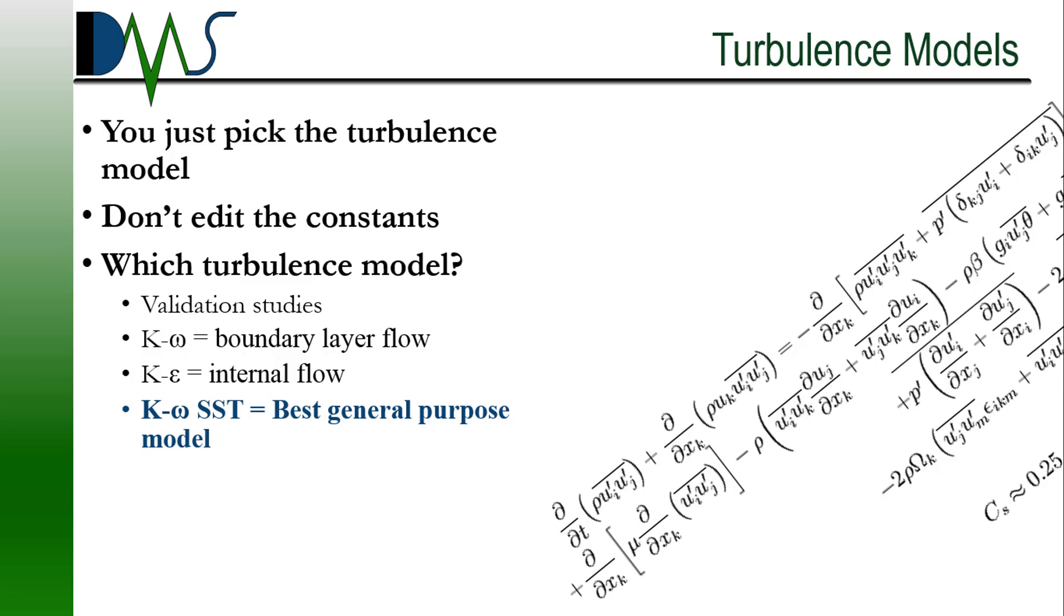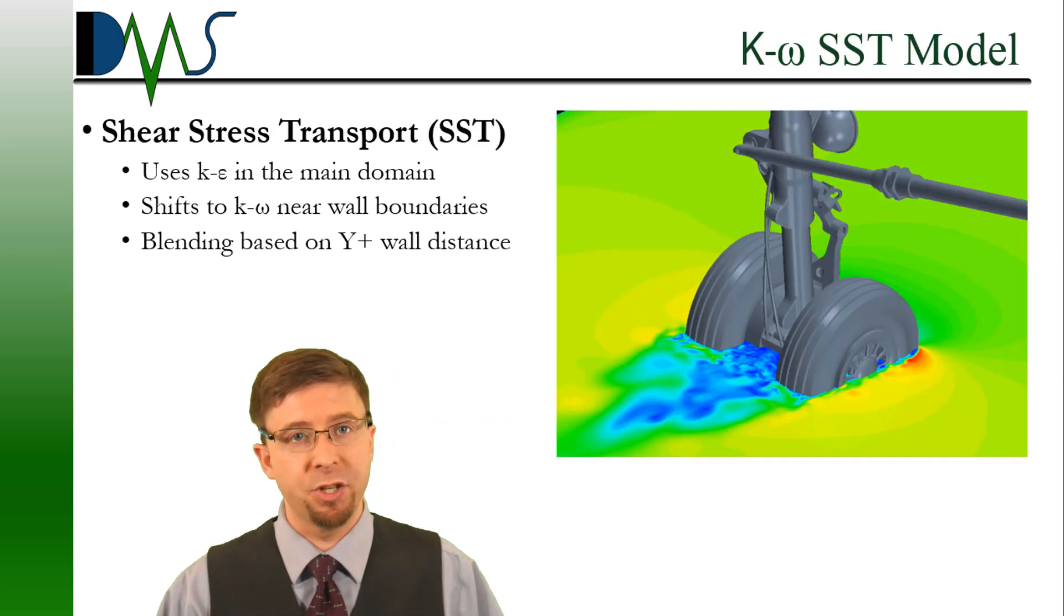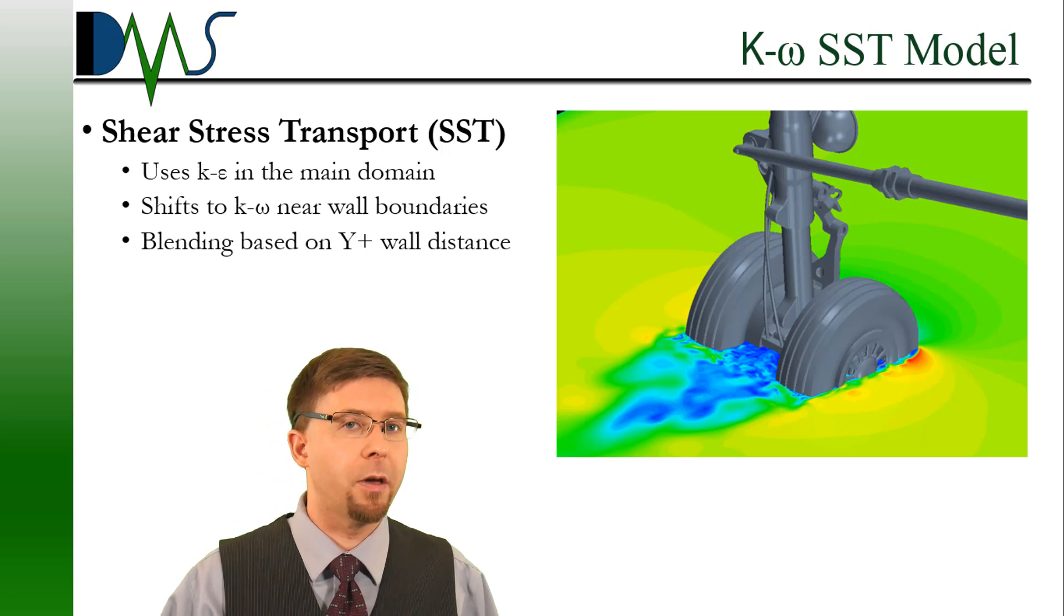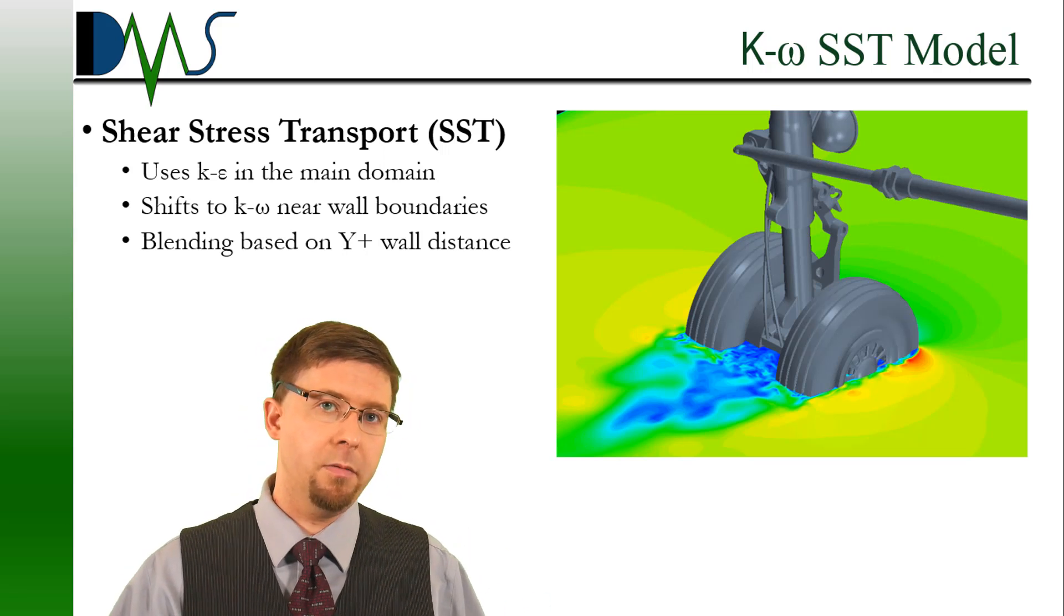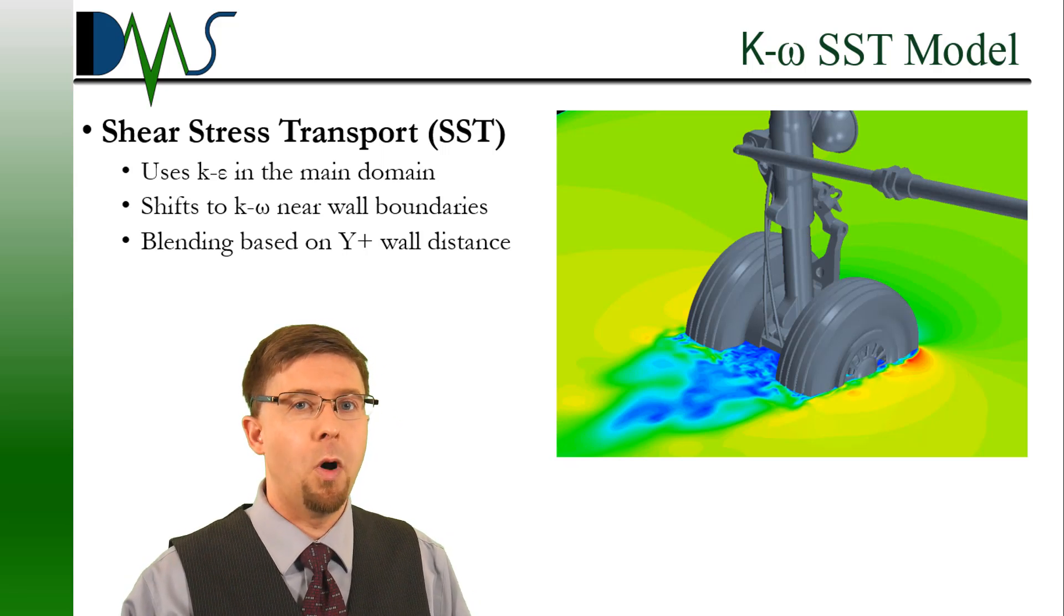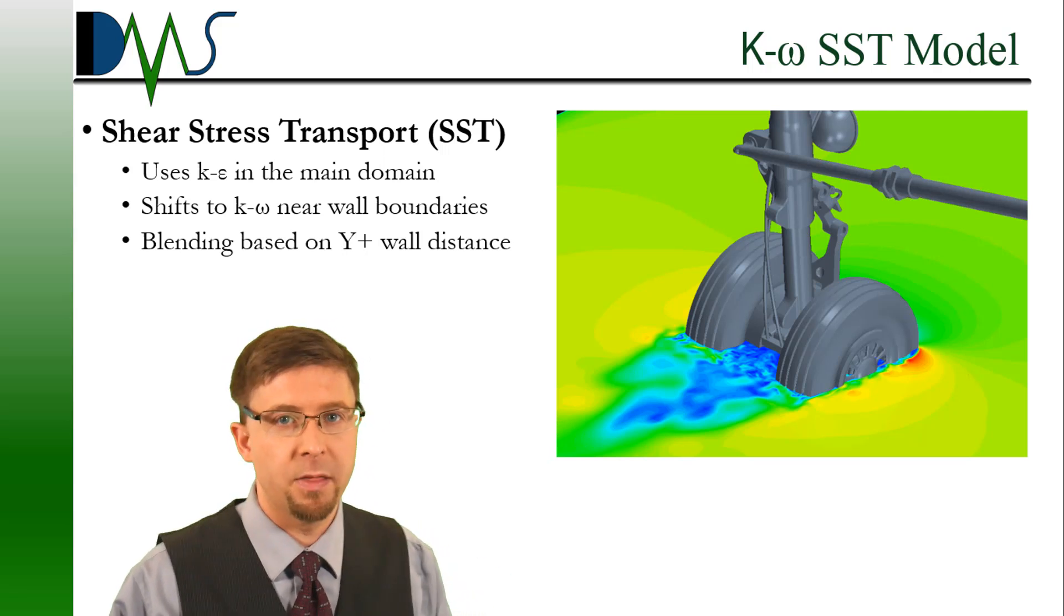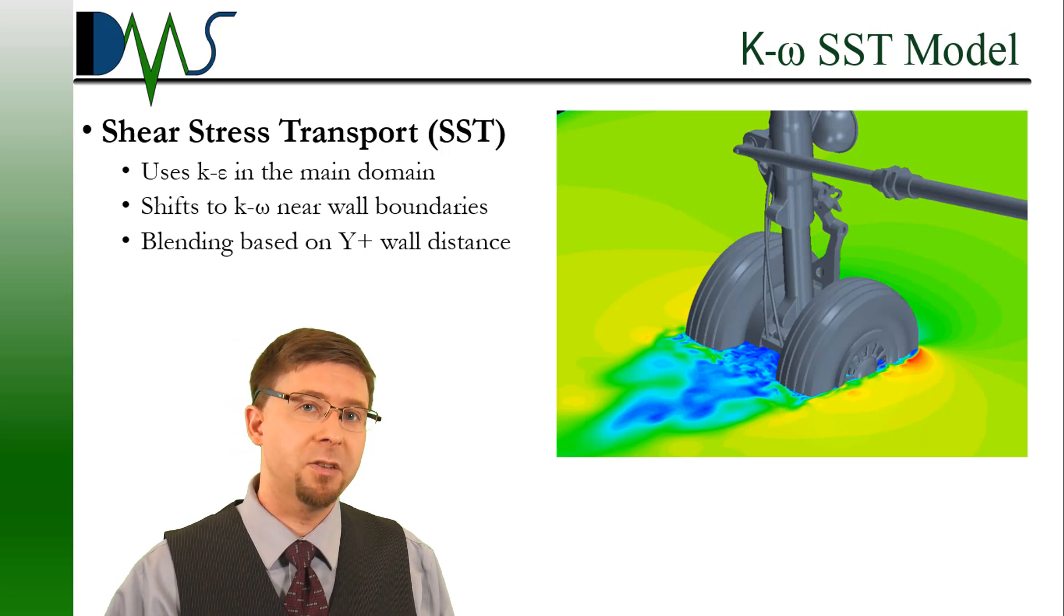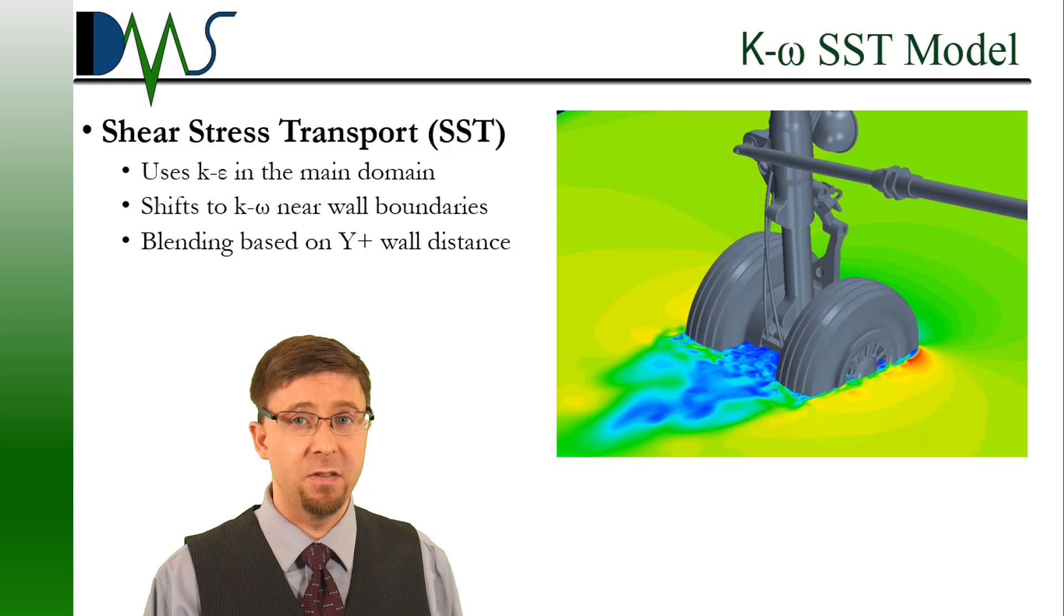But my go-to model is the K omega SST model, shear stress transport. The K omega SST, the shear stress transport model, is actually sort of a combination of the K epsilon and K omega. It uses the K epsilon model in the main domain, far away from the body, but then it shifts to using the K omega model when you're near the wall boundaries. That is near your main object. And it handles the shift between those two based upon the Y plus wall distance away from your object. So that is probably your best go-to model. I would say I use that for anywhere between 80 to 90% of all of my CFD simulations.